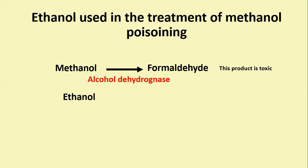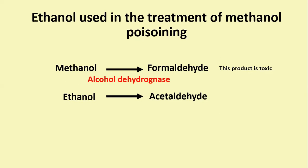Ethanol can be used as an antidote. It is a structural analog of methanol and can competitively inhibit the enzyme alcohol dehydrogenase by binding it more effectively, thus blocking the metabolism of methanol. Methanol can then be excreted by the kidney without converting to toxic compounds. Thus ethanol is used in the treatment of methanol poisoning.